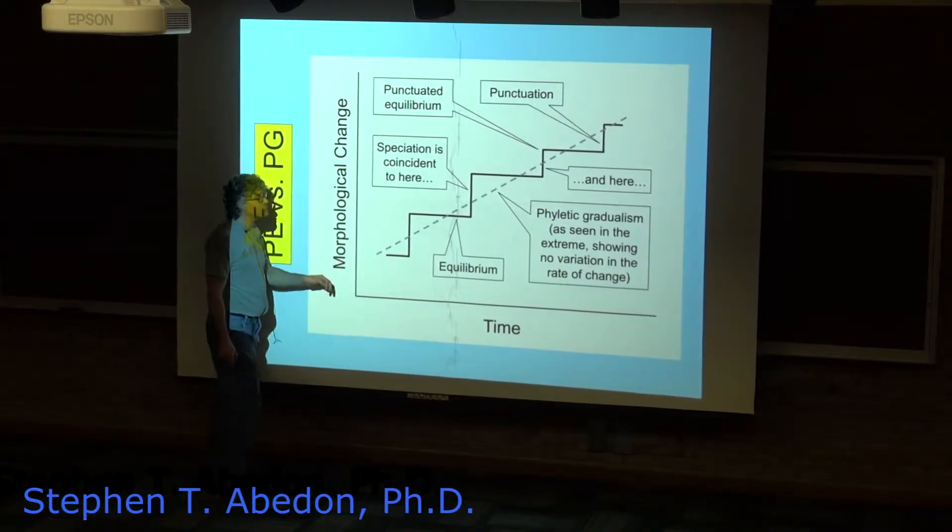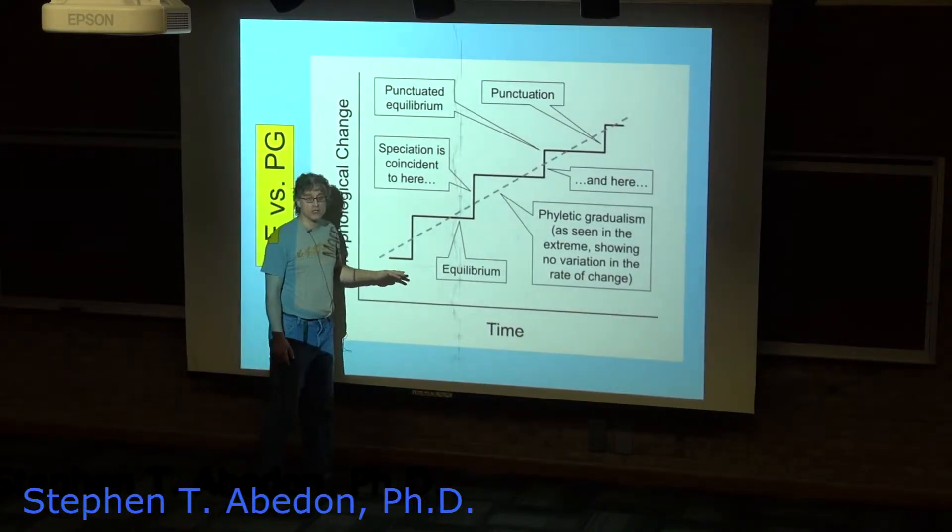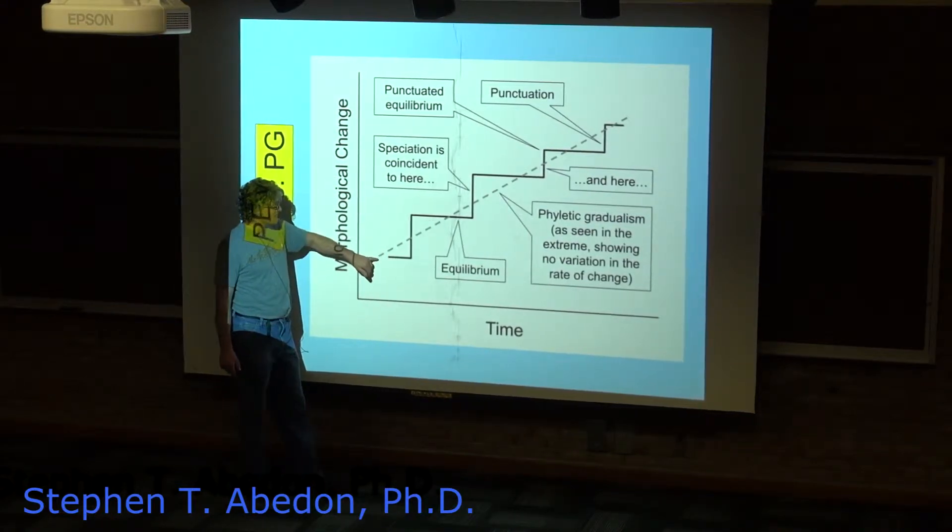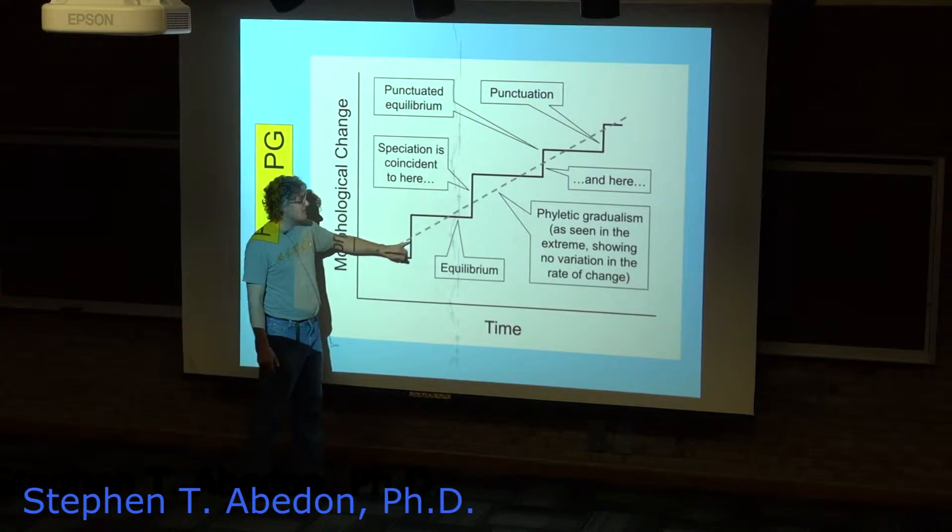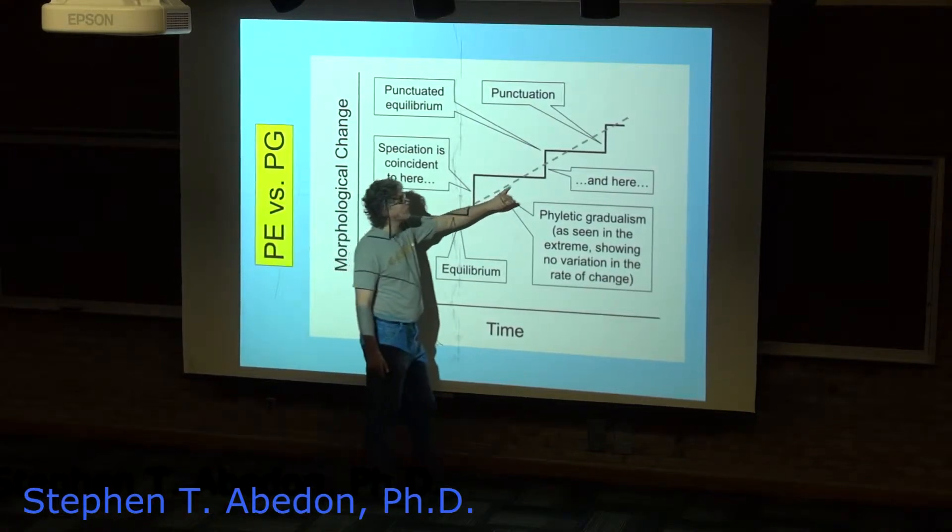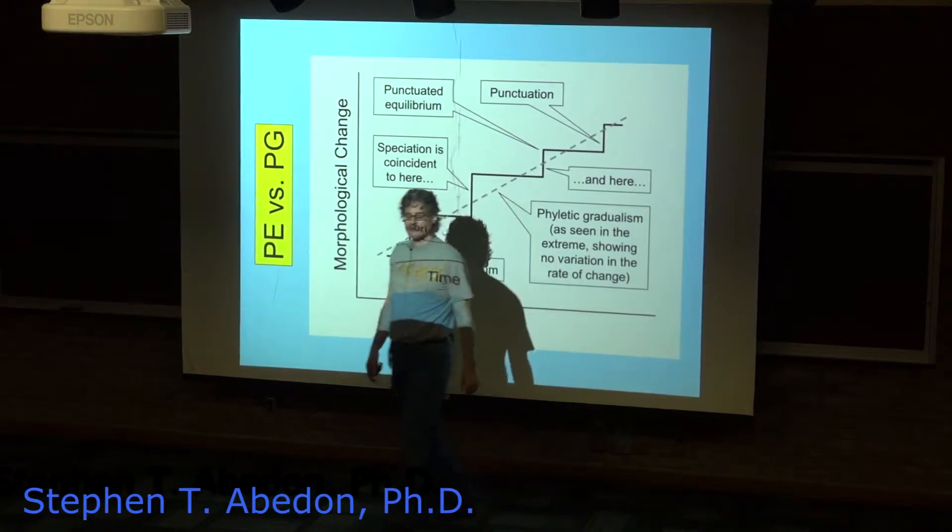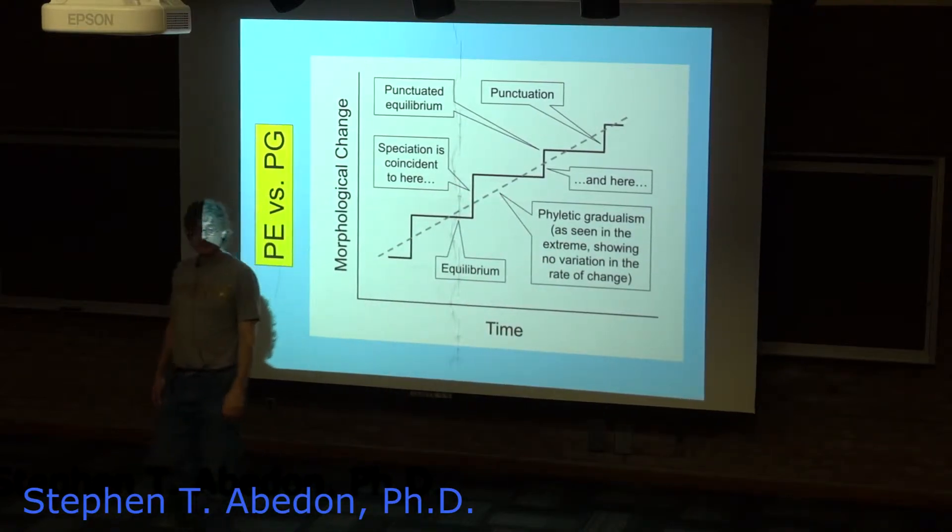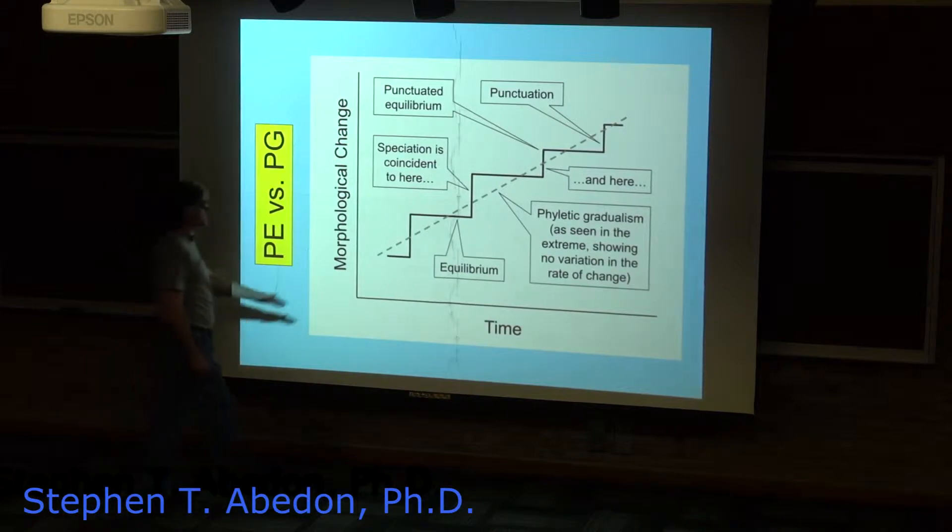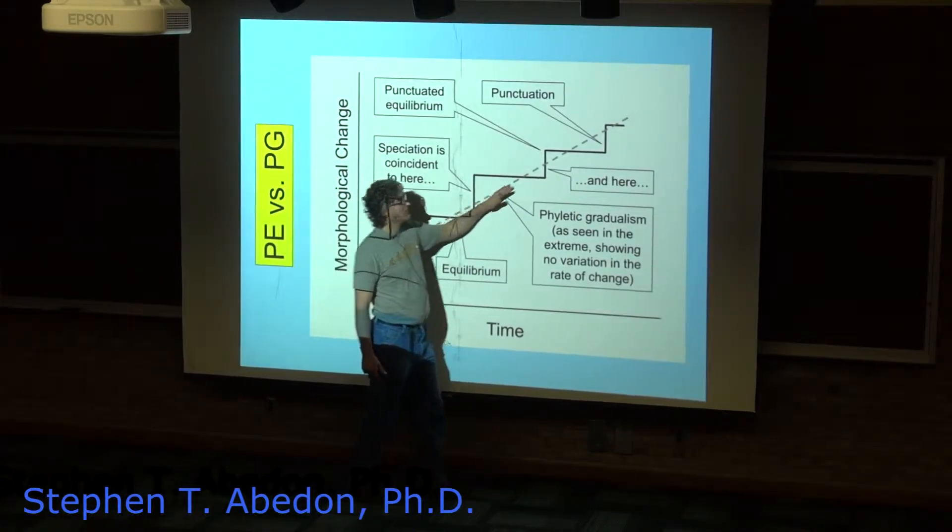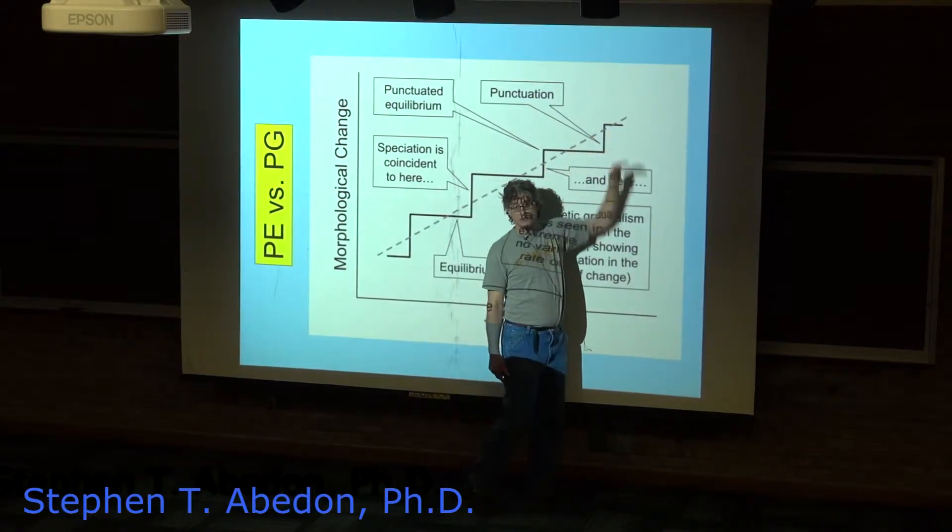You've got two hypotheses for how change occurs over time over multiple species in the fossil record. You either have phyletic gradualism where you have essentially a low variance in the rate of change, so change is more or less constant. This doesn't have to be a perfectly straight line, it's a little wiggly, but it's more or less constant through time.